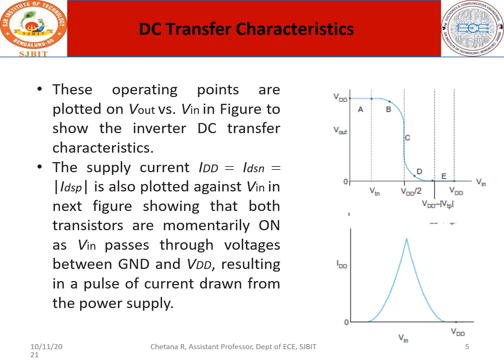The supply current IDD equals IDSN, which in turn equals IDSP. From VTN, the NMOS device is off and starts conducting. The condition extends to VDD minus VTP, so only within this region is the device on, and you get a current curve. The current curve is an inverted V shape — at one particular point it is very steep. At point C, both devices are momentarily on. This is the DC transfer characteristics.